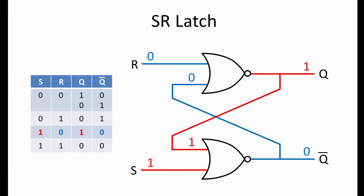A set pulse is applied. S is 1, and R is 0. The output Q becomes 1, and its inverse becomes 0.